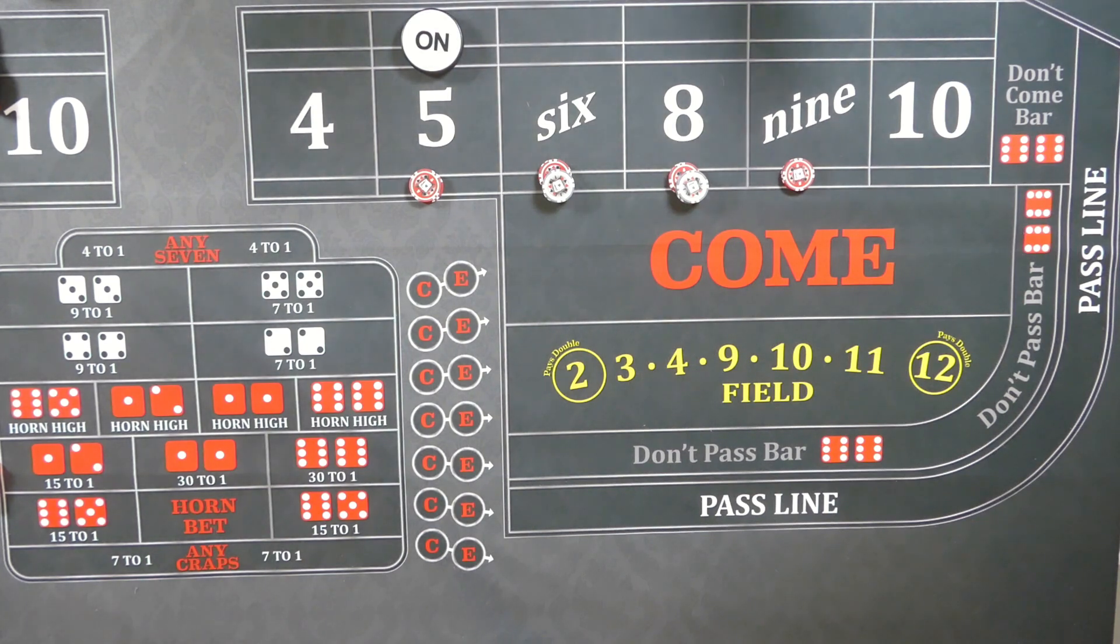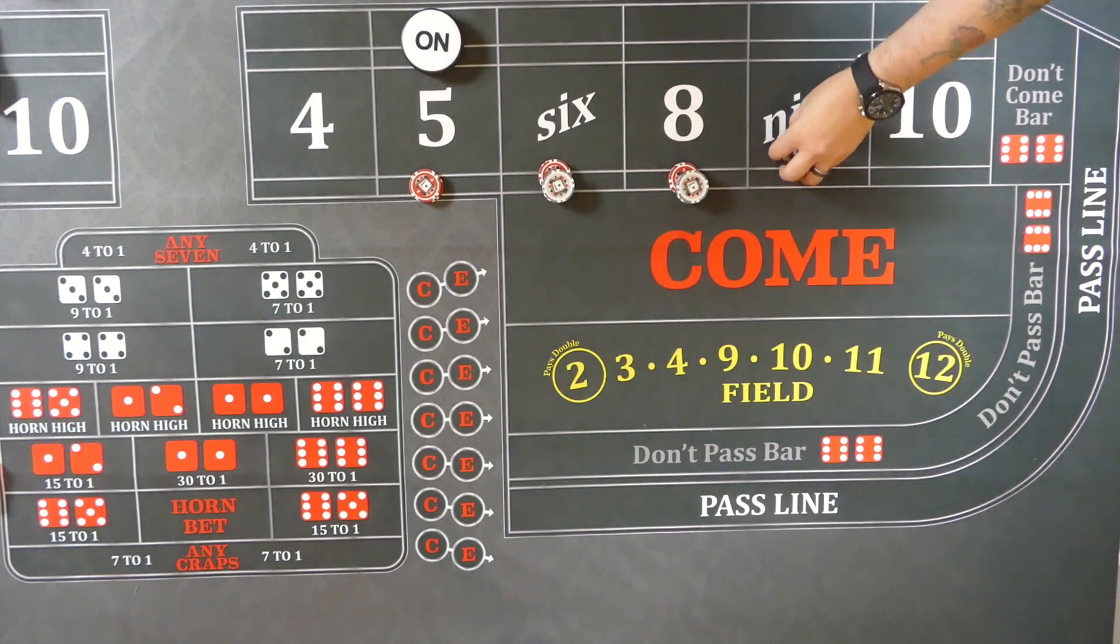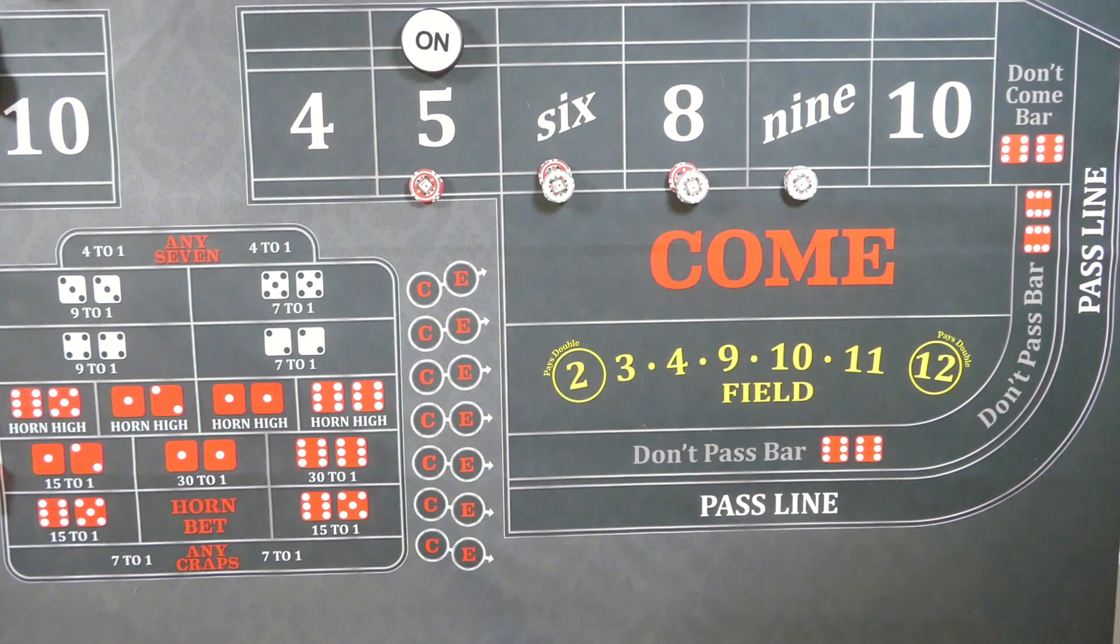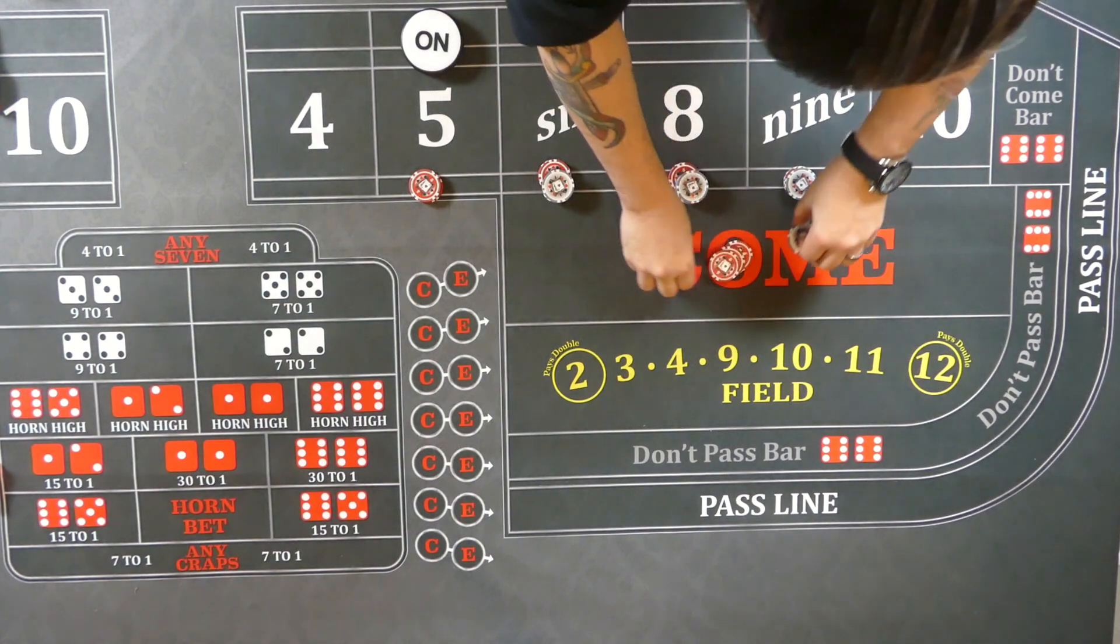So if a 5 or a 9 hits, you're just going to go all the way up to $36. If a 6 or 8 hits, that's a little bit different. This is where you need to decide what you want to do.